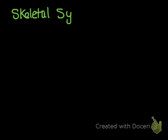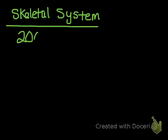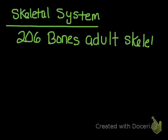We are going to be reviewing the skeletal system. The first thing I want to talk about is how many bones there are. There are 206 bones in the adult skeleton. It's important to specify the adult skeleton because the fetal skeleton has more bones, since certain pieces like the spine are not yet fused together.